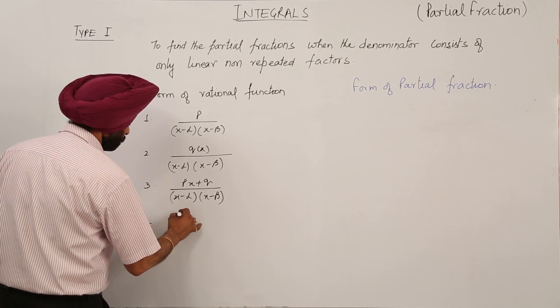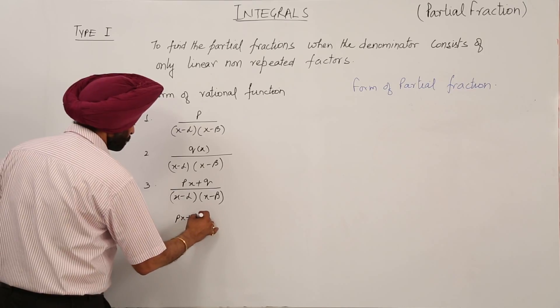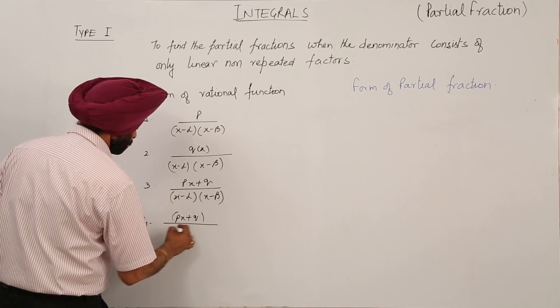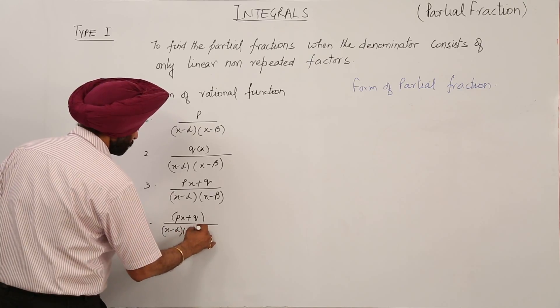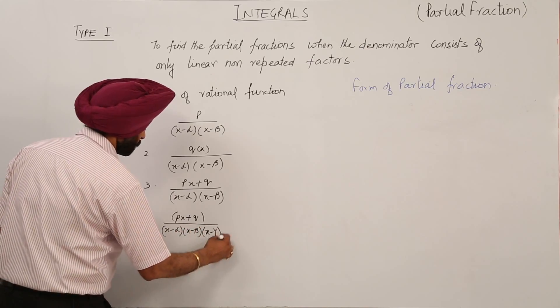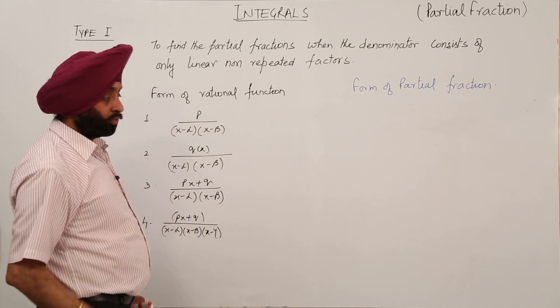It can be Px plus Q upon x minus alpha x minus beta x minus gamma. So it can be in any form.